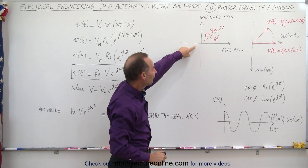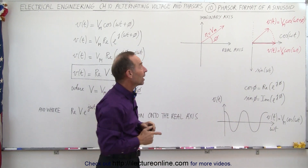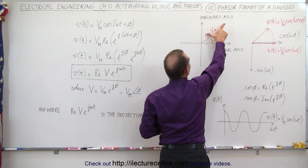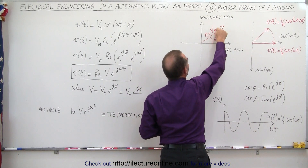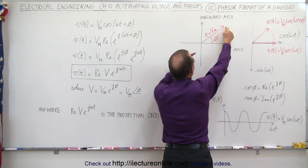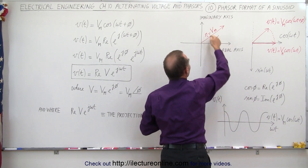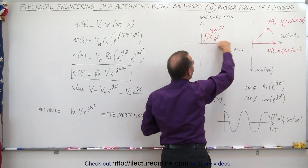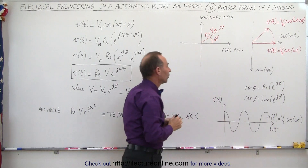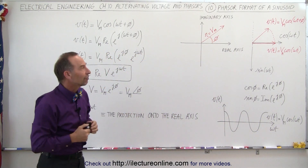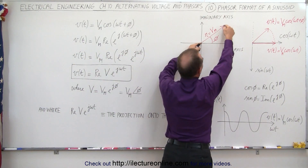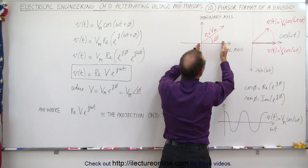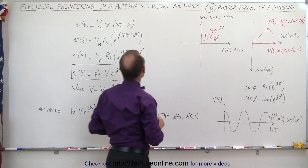Here we have the phasor format of the same thing. Notice that we have the magnitude of the voltage, which we call v max. So v max would be the magnitude of this vector, and then we have a phase difference. If the phase difference is zero, the vector would be on the horizontal real axis. The real part of that vector is the projection of the vector onto the real axis, which represents the voltage at a particular moment in time.